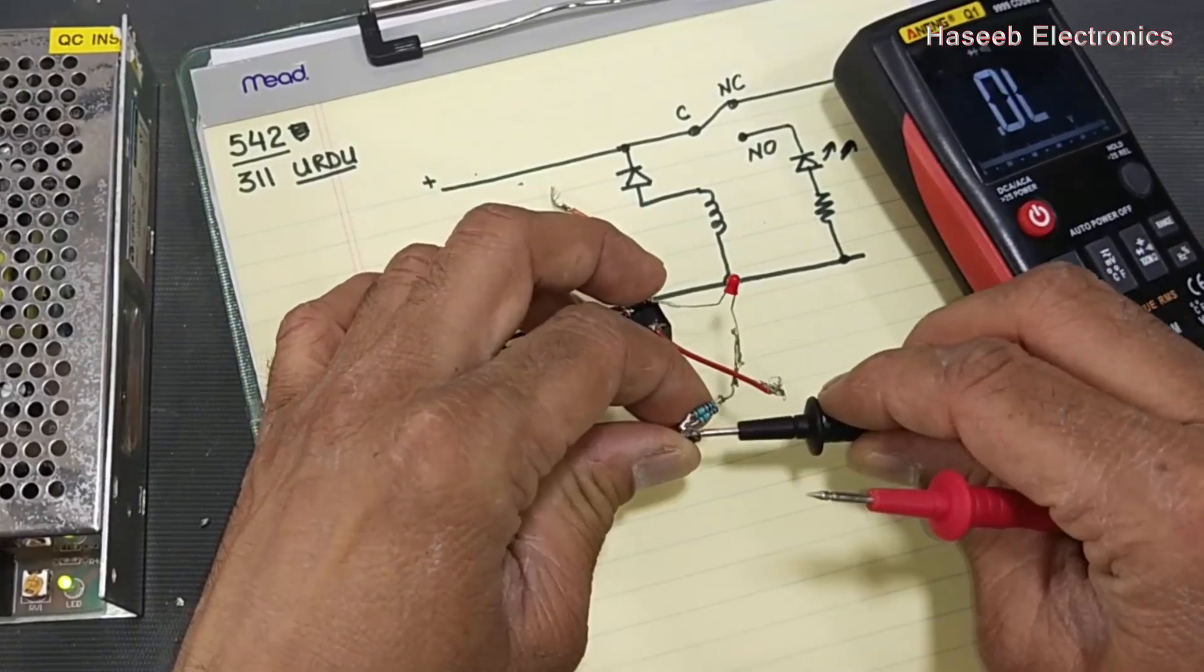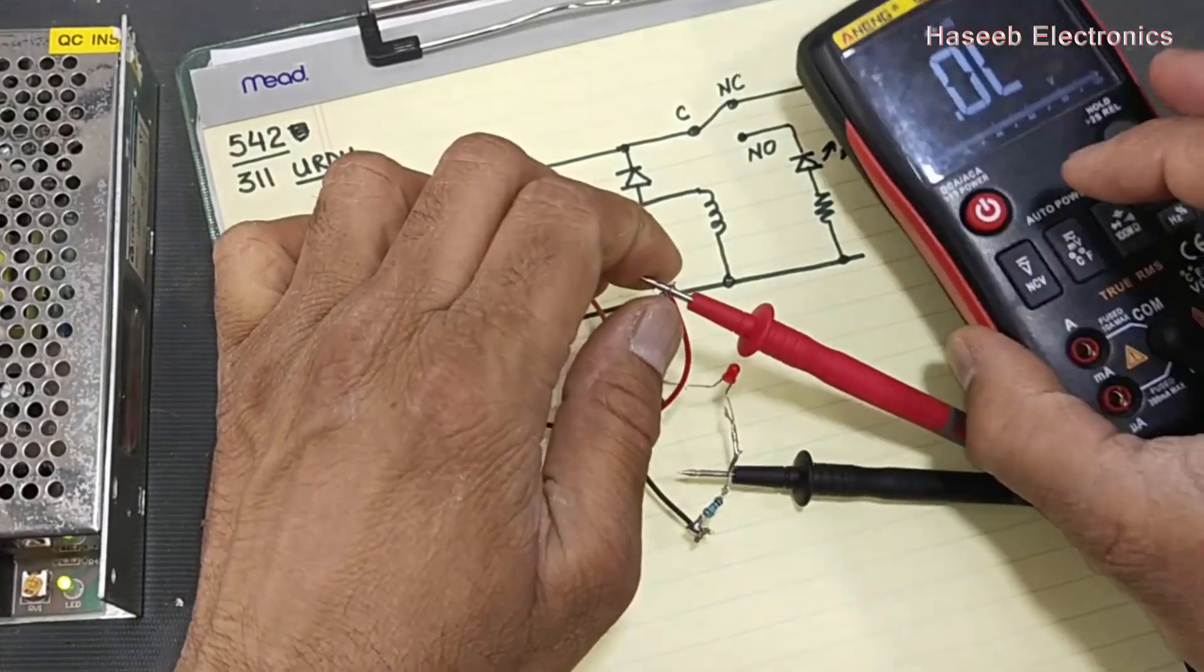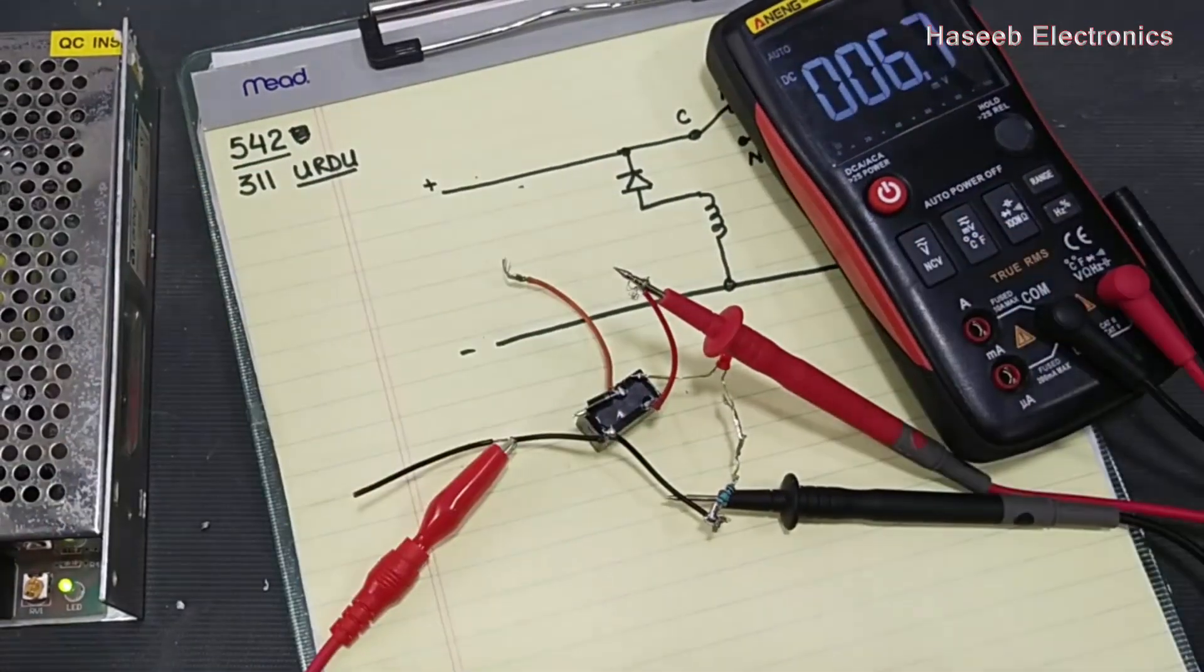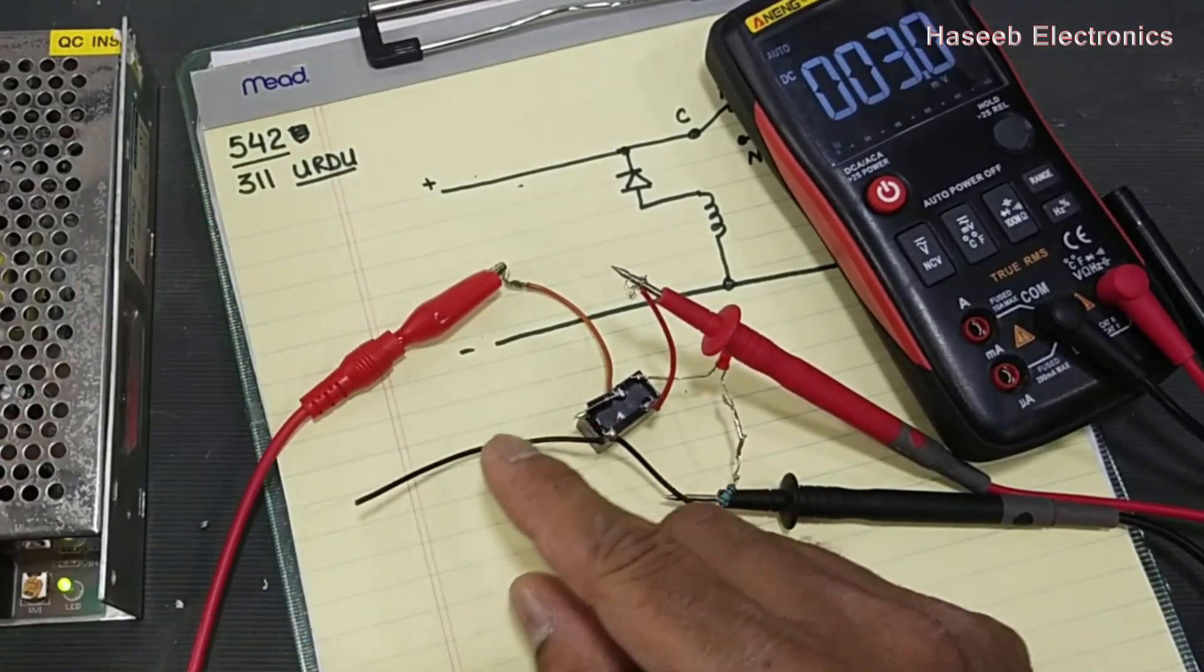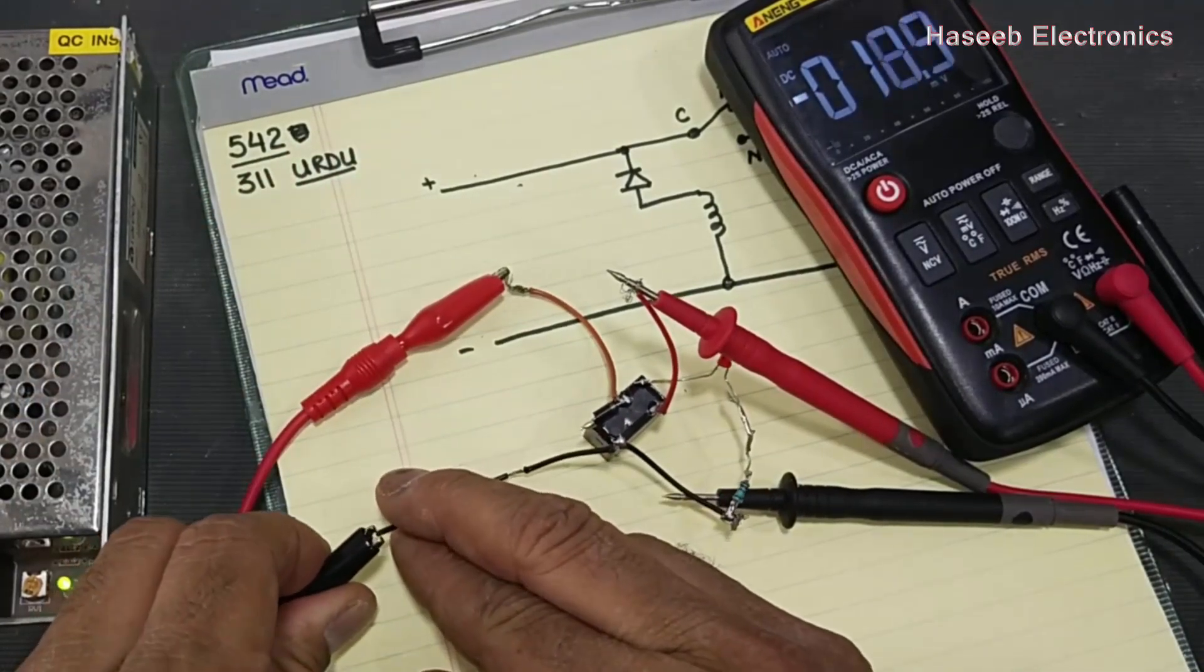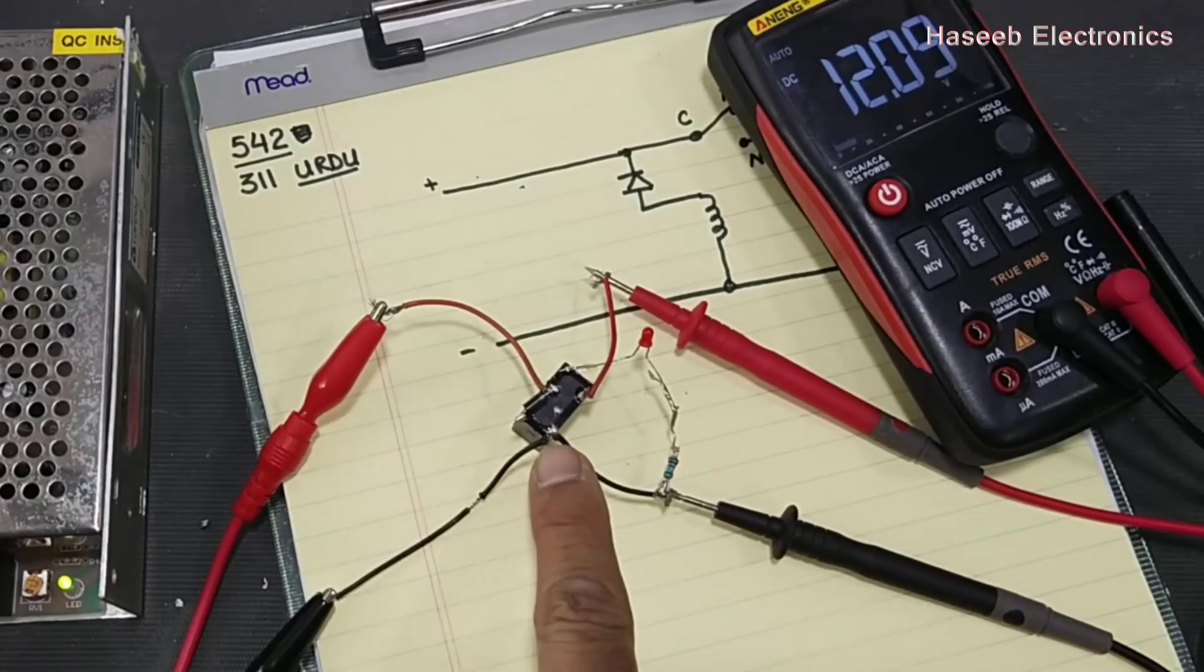DC voltage. Positive is connected to the positive input terminal, and negative we connected to the negative line.